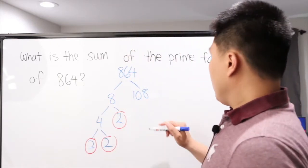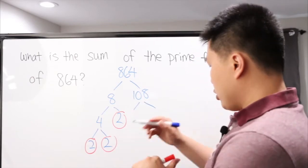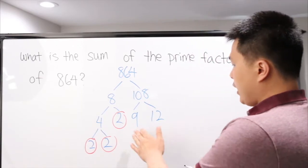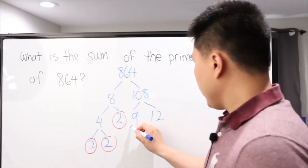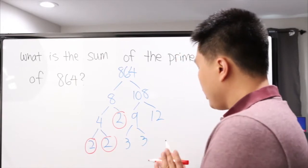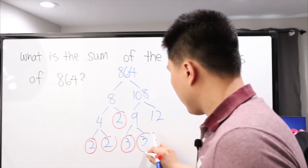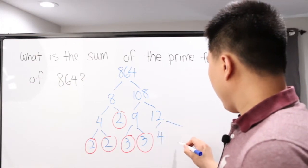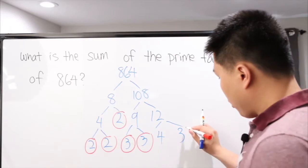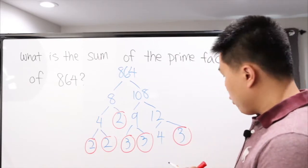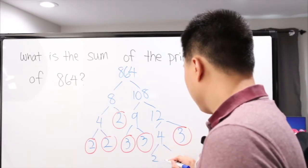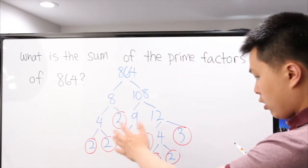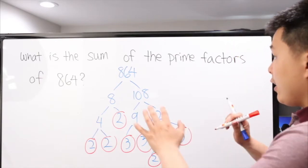Now we have to worry about 108. From our experience, 108 can be broken down into 9 and 12. Well, 9 can be broken down into 3 and 3 — those 3s are prime. And 12 can be broken down into 4 and 3 — this 3 is a prime as well. Lastly, 4 can be broken down into 2 and 2, which are prime. Great — we've followed everything and all of them are prime factors.